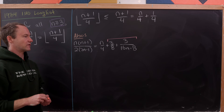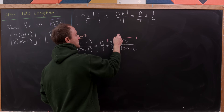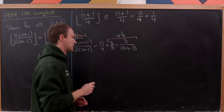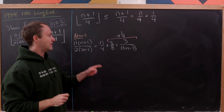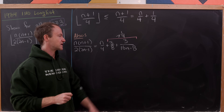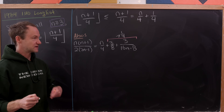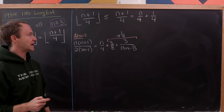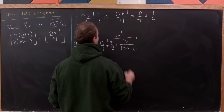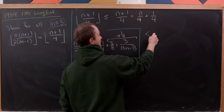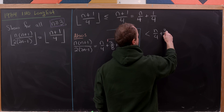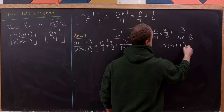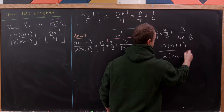Let's observe that 3 over 8 plus 3 over 16n minus 8 is definitely strictly bigger than 1 over 4. That's pretty clear: 3 over 8 is bigger than 1 over 4, and 3 over 16n minus 8 is always positive as long as n is bigger than or equal to 1 — we don't even need n bigger than or equal to 3 here. So we can say that n over 4 plus 1 over 4 is strictly less than n over 4 plus 3 over 8 plus 3 over 16n minus 8, which equals n times n plus 1 over 2 times 2n minus 1.